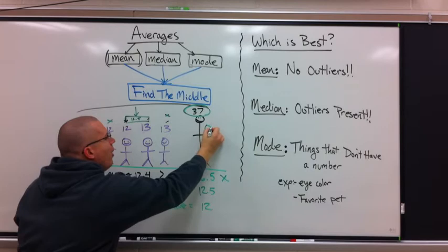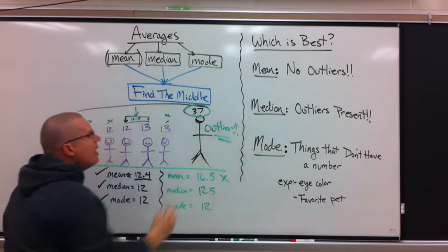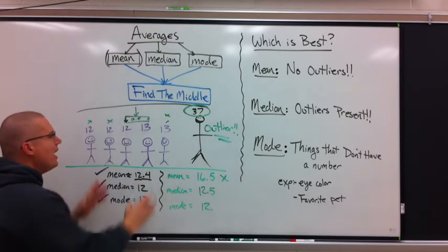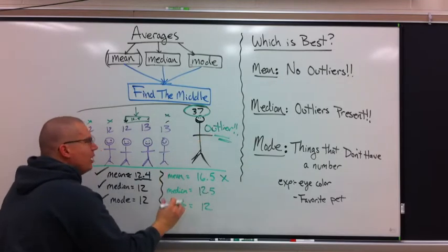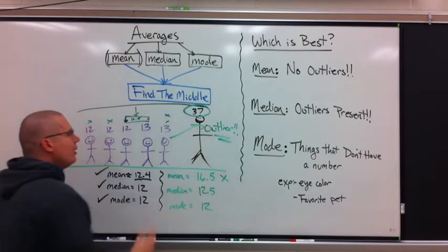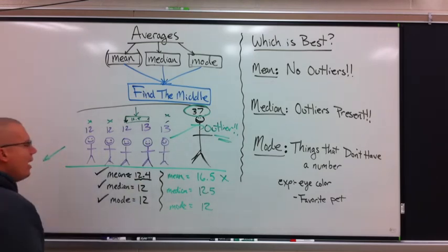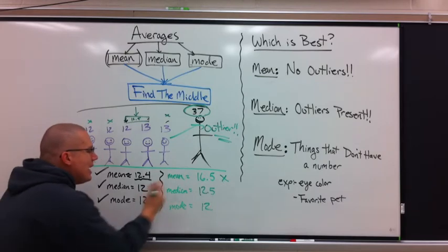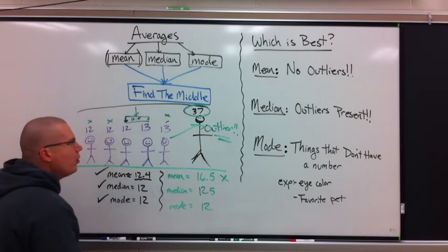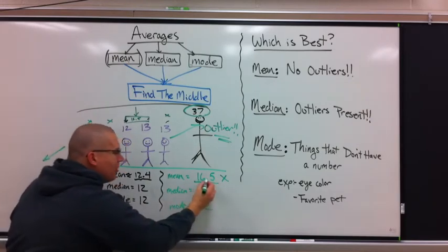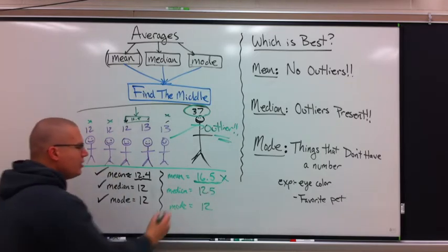This number is called an outlier. An outlier is a much larger or smaller number that is different than the rest. Outlier changes the mean. It pulls it way up because it's bigger. If it was really small, it would pull it way down. So the mean average is not good if there is an outlier in the group. It's not. This is not accurate. The average age of a 7th grade class is not 16 going on 17. That's no good.